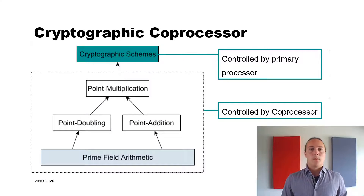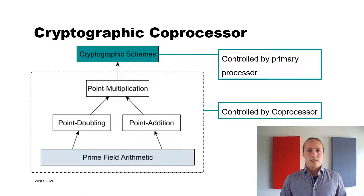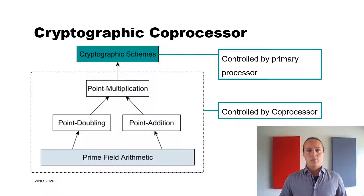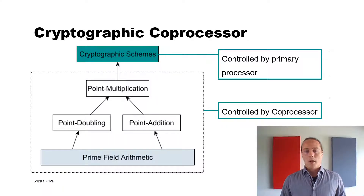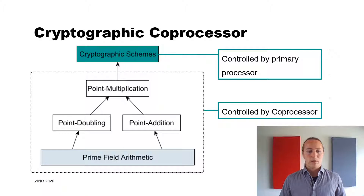There are multiple cryptographic schemes — I just showed you one example. The idea of the coprocessor is that the primary processor controls the cryptographic scheme, for example this elliptic curve Diffie-Hellman, and the coprocessor only computes the point multiplication. Since the point multiplication is the most expensive operation of these schemes, the remaining operations are negligible in comparison.